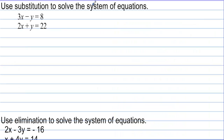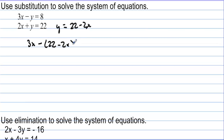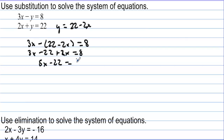Use substitution to solve the system of equations. Let's get one of these y's by itself. Maybe we could do y equals 22 minus 2x. Then we'll plug that in for the other y: we have 3x minus (22 minus 2x) equals 8, so 3x minus 22 plus 2x equals 8, giving us 5x minus 22 equals 8.